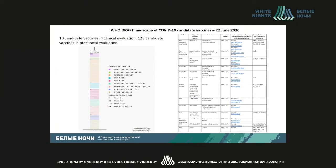This is the WHO draft landscape of COVID-19 candidate vaccines. 13 of them are at the clinical trial stage and 129 vaccines are in preclinical evaluation. As you can see, the vaccines on the left include inactivated, live attenuated, protein subunit, DNA-based, RNA-based, and other vaccine categories. So all categories involved in vaccine development are being used.